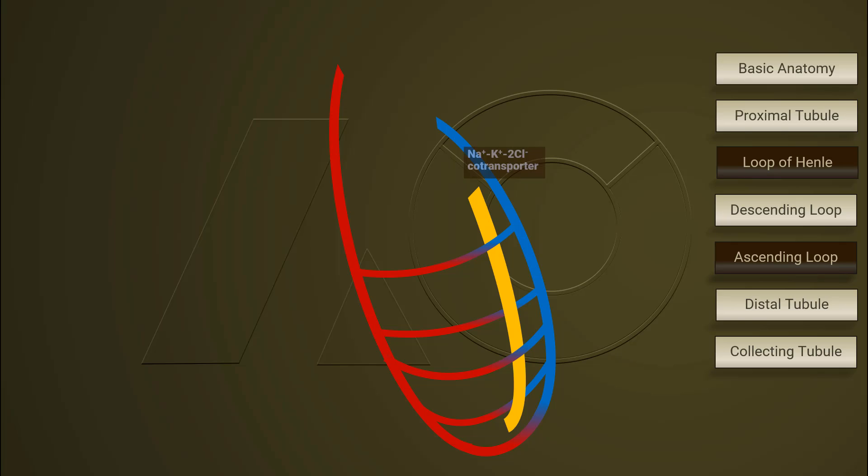The sodium, potassium, and chloride cotransporter moves these three cations into interstitial fluid and then these three cations are reabsorbed via secondary active transportation into the bloodstream.